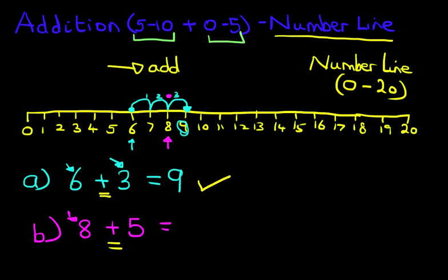Now how many jumps are we going to take to the right? It tells us in the question. It's 5 jumps. So we're going to take 5 jumps. Watch carefully. 1, 2, 3, 4, 5.